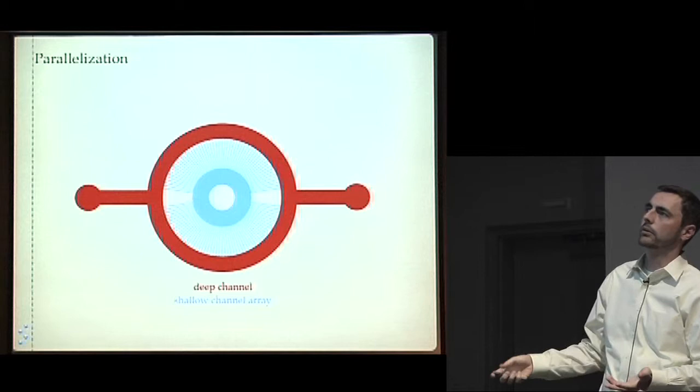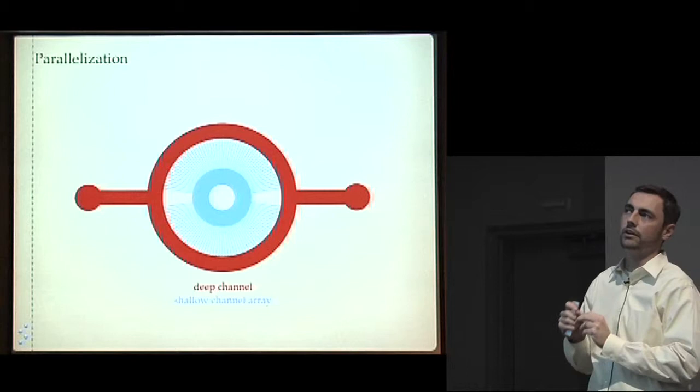The blue channels shown here are very narrow and very thin, very shallow. And the annular red channel here, the donut-shaped channel, is very deep and very wide.